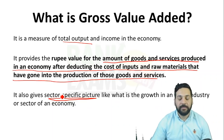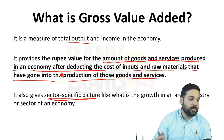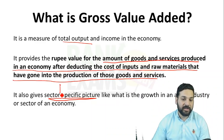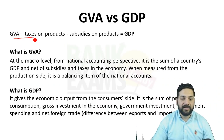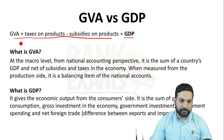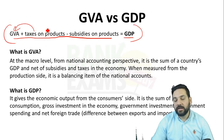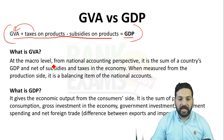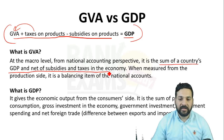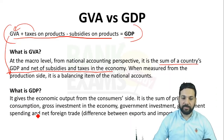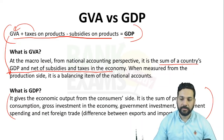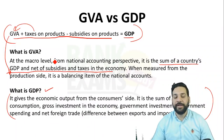GVA was used because it provides a sector-specific picture. It is a supply-side measure, while GDP is a demand-side measure. The difference between GVA and GDP is: GVA plus taxes minus subsidies equals GDP, because taxes are not considered in GVA and the tax treatment differs between GVA and GDP. GDP gives the economic output from the consumer side — it is the sum of private consumption, gross investment, government investment, government spending, and net foreign trade.